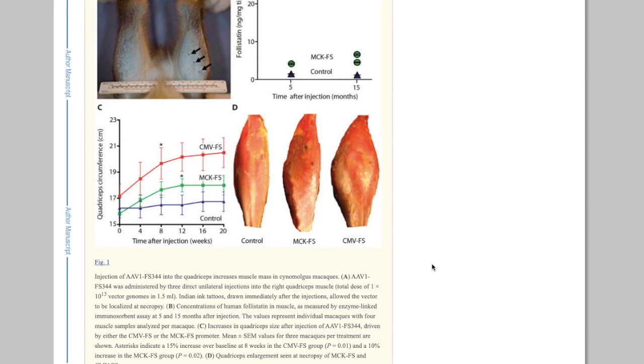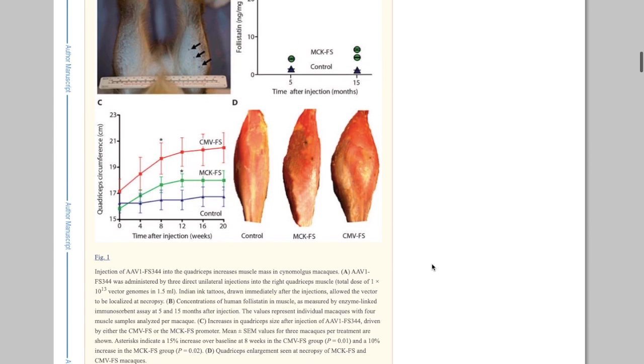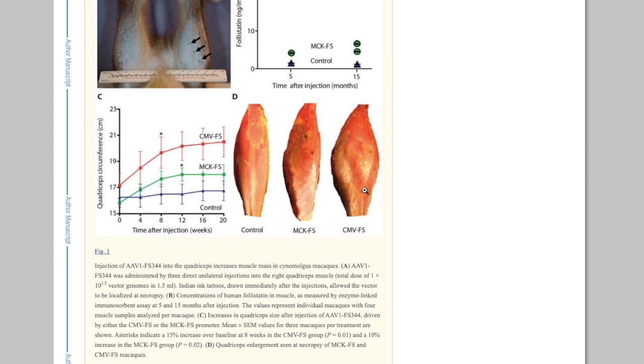Now as far as us naturals, the best thing we could do is just lower myostatin and increase follistatin through training. Because obviously, once these things become common, if you inject the follistatin-producing virus in your body, you're no longer natty. That goes without saying.